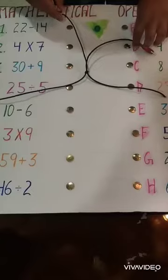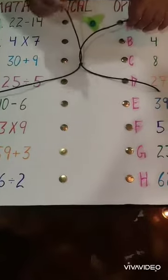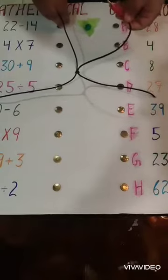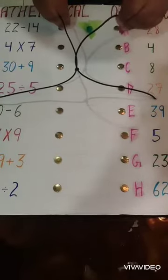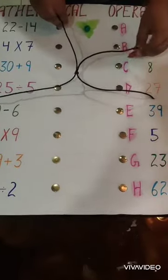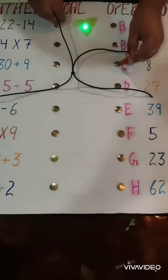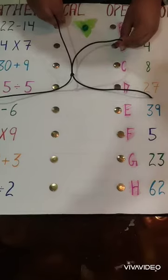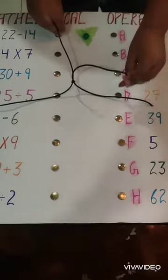If I touch a test lead to the pin of the question side and the other lead is touched to the pin of the answer side, where the answer is correct, the bulb will glow. If the answer is incorrect, the bulb will not glow.